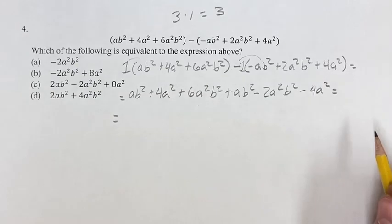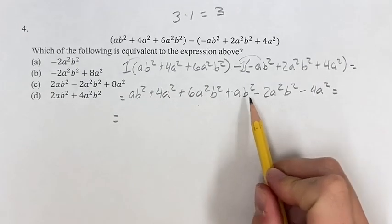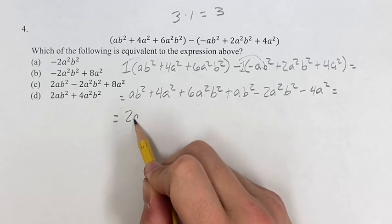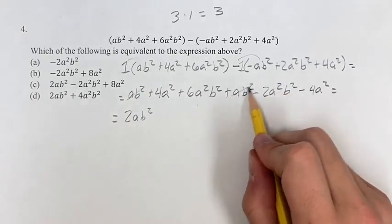So now we can just combine like terms. We have ab² and ab², so those become 2ab². Just cross them off to make sure we've gotten them.